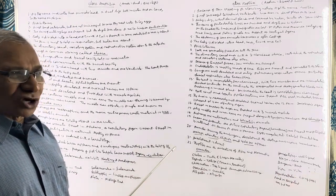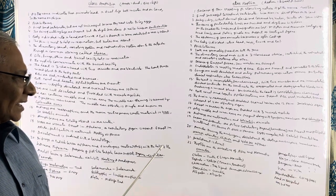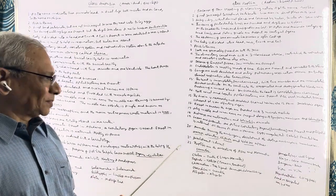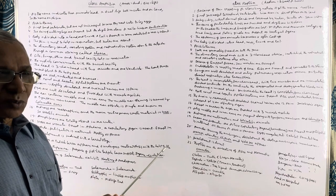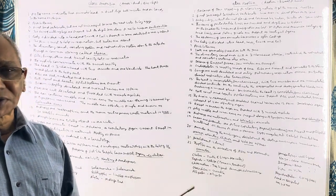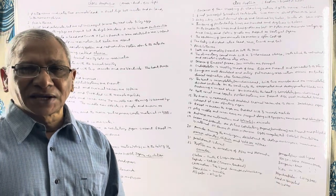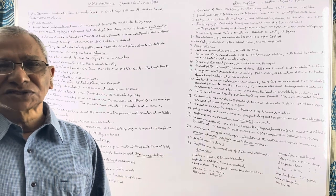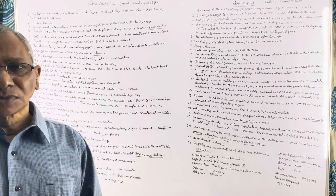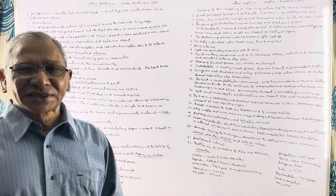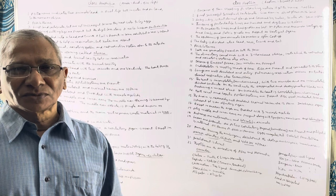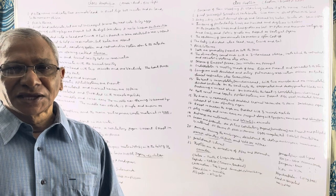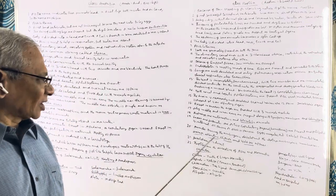All are oviparous and the eggs are megalecithal. Reptiles also exhibit parental care. One most important point: during embryonic development, four extra-embryonic membranes appear in reptiles, birds, and mammals — these are amnion, allantois, chorion, and yolk sac. Because of the presence of these membranes, these three classes are known as amniotes. Fishes and amphibians do not produce extra-embryonic membranes, so they are called anamniotes. The development is direct without any larval stages.